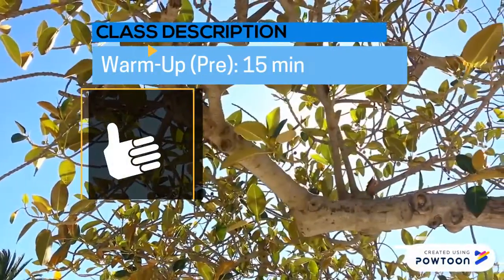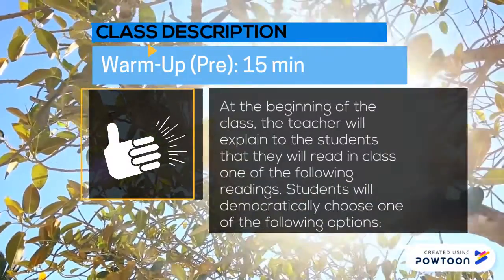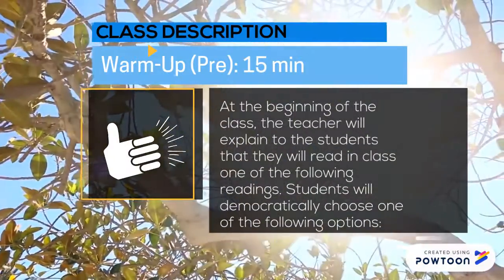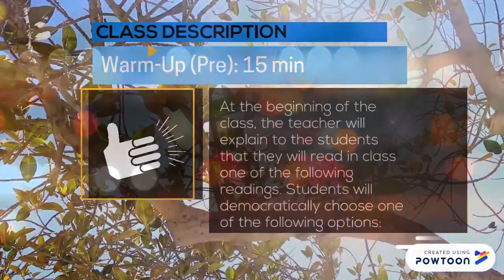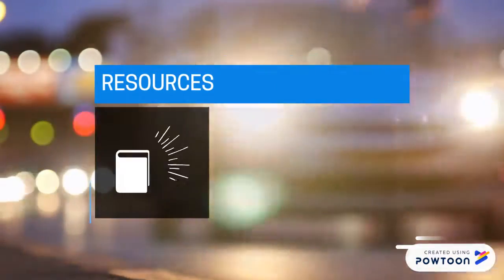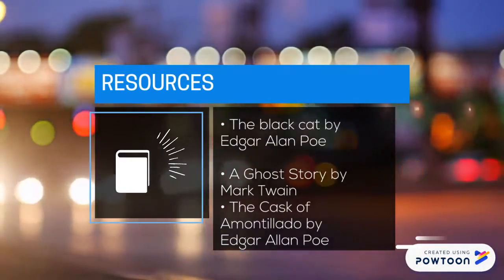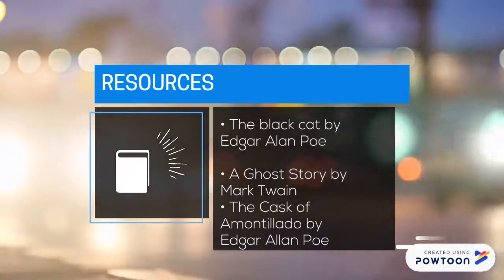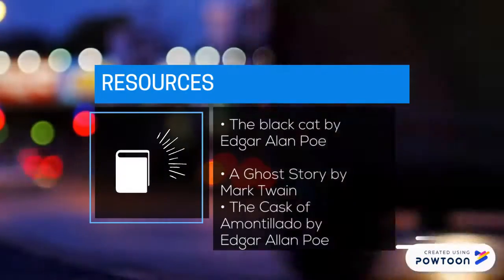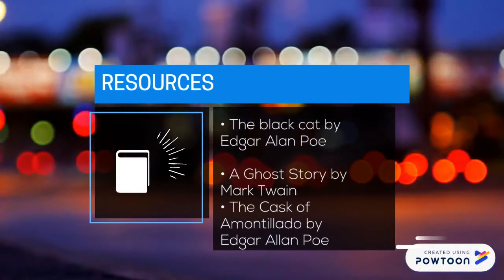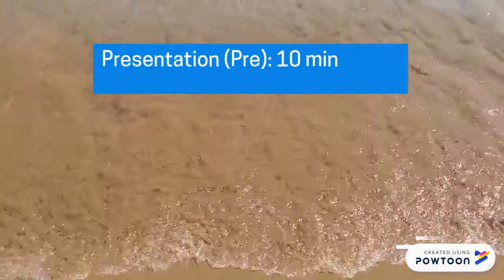Description — 15 minutes. At the beginning of the class, the teacher will explain to students that they will read in class. Students will democratically choose one of the following options: The Black Cat by Edgar Allan Poe, A Ghost Story by Mark Twain, or The Cask of Amontillado by Edgar Allan Poe.